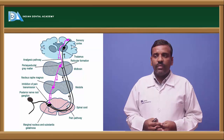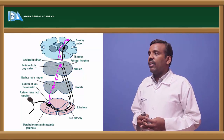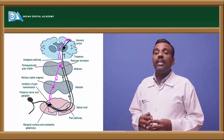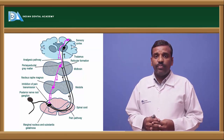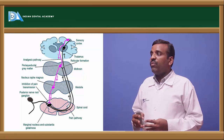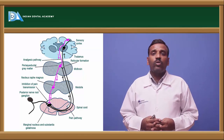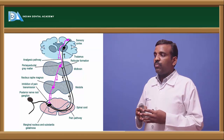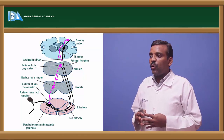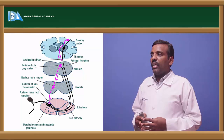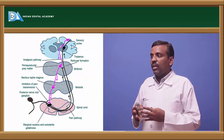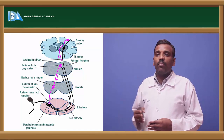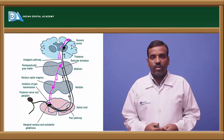From the medulla oblongata, the impulse reaches the midbrain where the periaqueductal gray matter receives the signals. After reticular formation processing, impulses reach the thalamus and then go directly to the sensory cortex. The complete pathway is: posterior root ganglia → marginal nucleus → spinal cord → medulla → thalamus → sensory cortex, constituting the lateral spinothalamic tract.